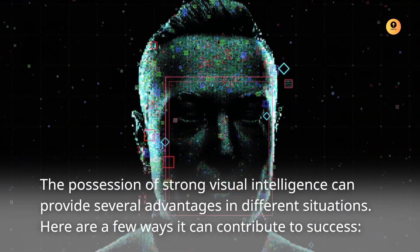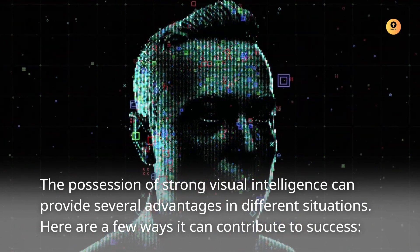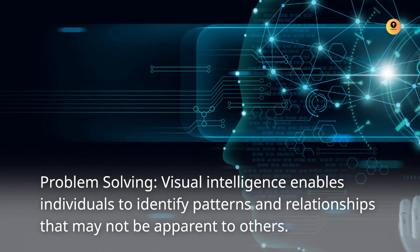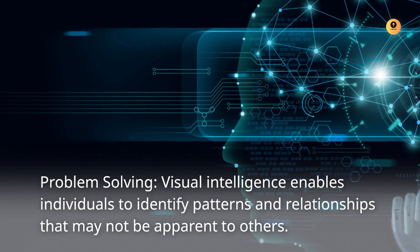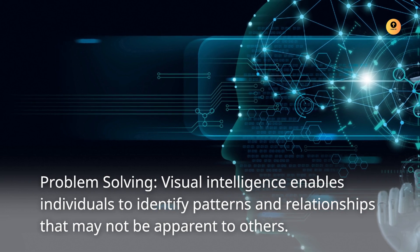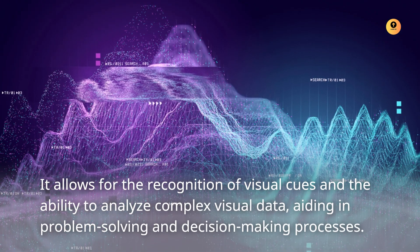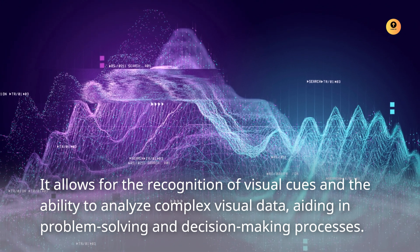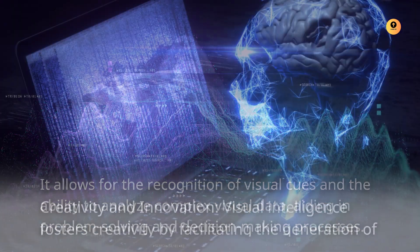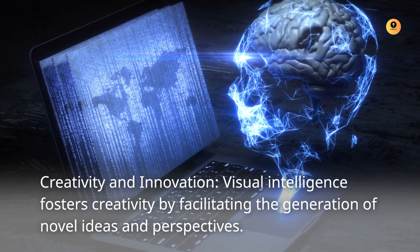The possession of strong visual intelligence can provide several advantages in different situations. Problem solving: visual intelligence enables individuals to identify patterns and relationships that may not be apparent to others. It allows for the recognition of visual cues and the ability to analyze complex visual data, aiding in problem solving and decision making processes.